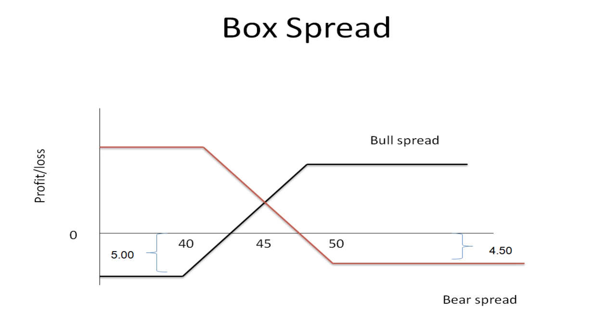Graphically, let's see what this looks like. You have a bull spread here and a bear spread here. The cost of the bull spread is $5, and the cost of the bear spread is $4.50. It turns out that regardless of the price, the value of the position is $10 at expiration.